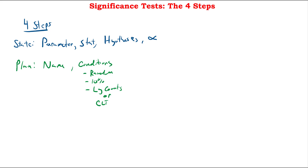For the next part, the Do step, it's a pretty simple part. You can calculate the numbers and get things rolling. The best thing is to have the general formula that you're going to be using. It doesn't necessarily need to be written out in letter format — you can just use the numbers. The best practice is to have a picture of your approximately normal curve and label it with your mean and standard deviation.